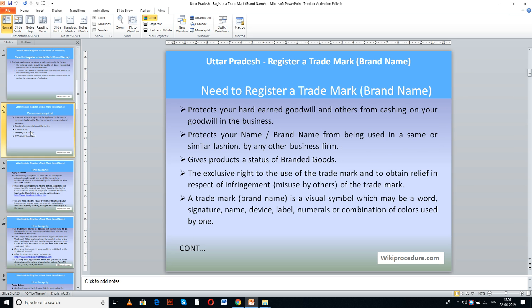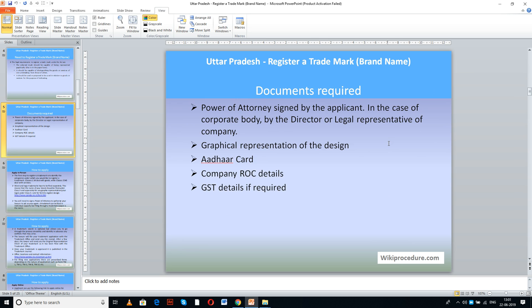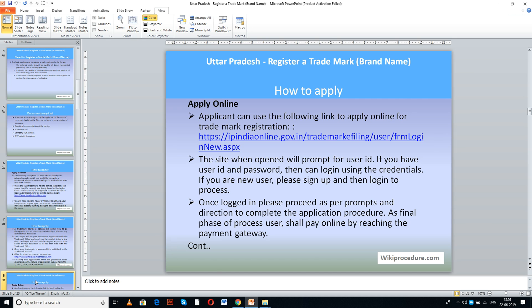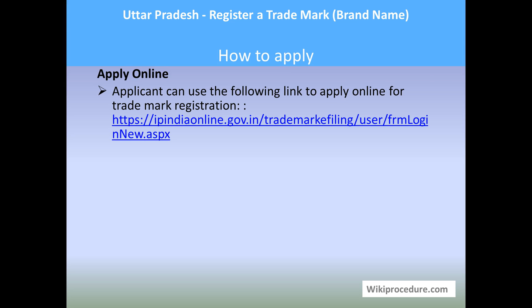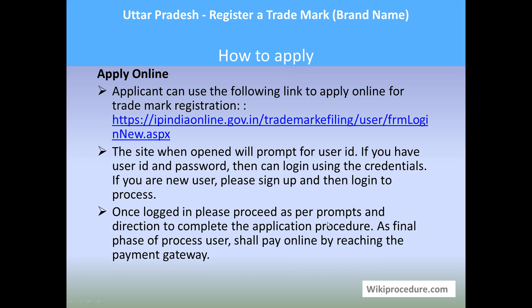Documents required for this procedure: you need a power of attorney signed by the applicant, or in case of a corporate body, by the director or legal representatives of the company — meaning a single point person who is supposed to go through this procedure. You also need a graphical representation of the design, Aadhar card, company ROC details, and GST details if required. Please scan those documents which are required for uploading and keep them in a separate folder so that you can access them while applying online.